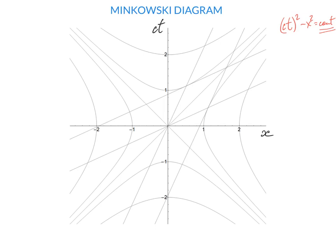The hyperbolas that cross the t-axis correspond to time-like intervals, and those that cross the x-axis correspond to space-like intervals. A special case where the constant is equal to zero is a straight line passing through the origin, and this line represents the light ray — ct equals x is the world line of a light ray.